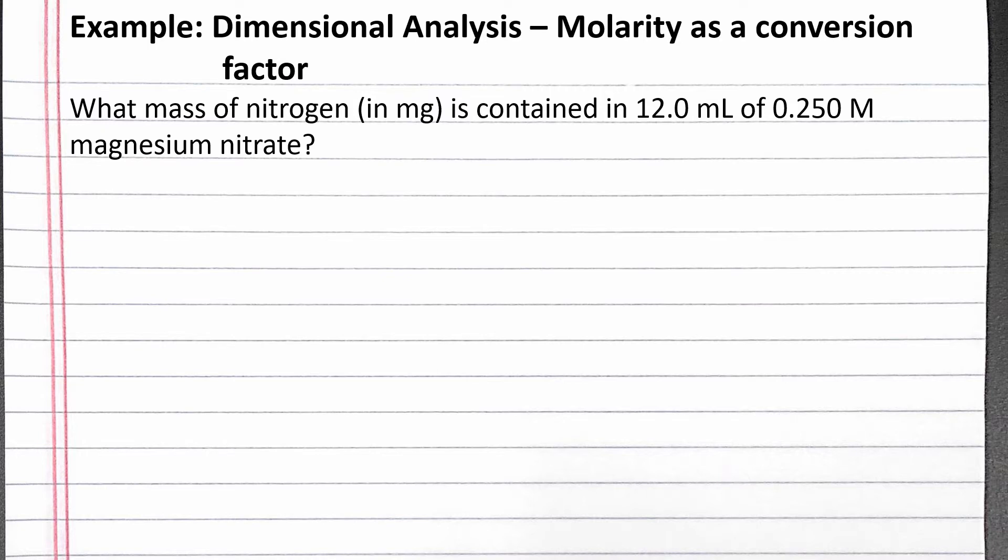Our problem reads: What mass of nitrogen in milligrams is contained in 12 milliliters of 0.25 molar magnesium nitrate? When we're given the molarity of the solution,